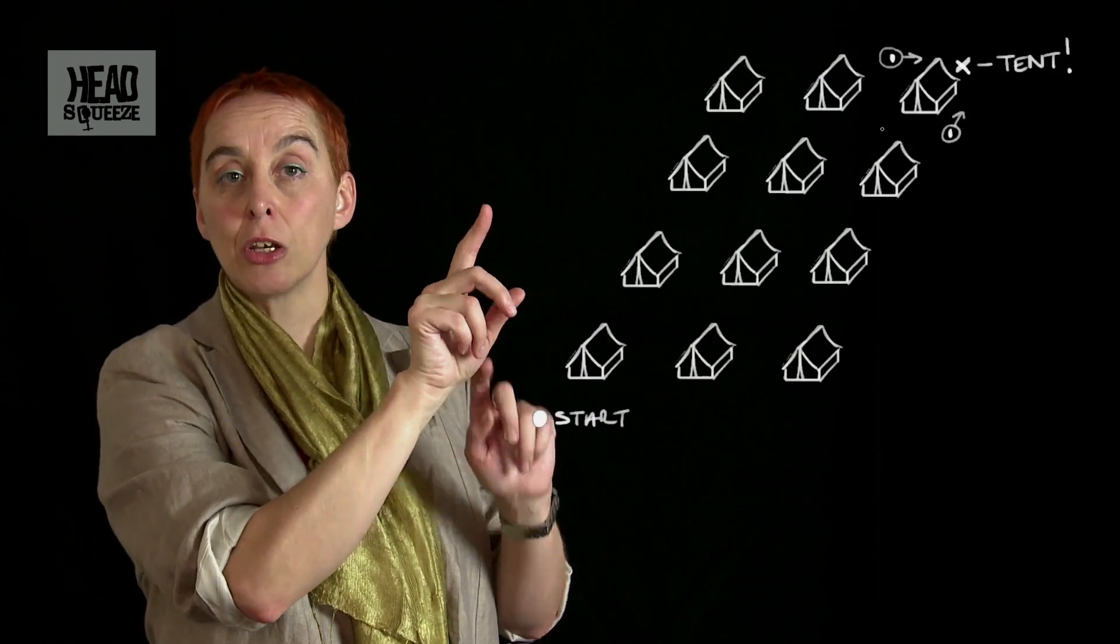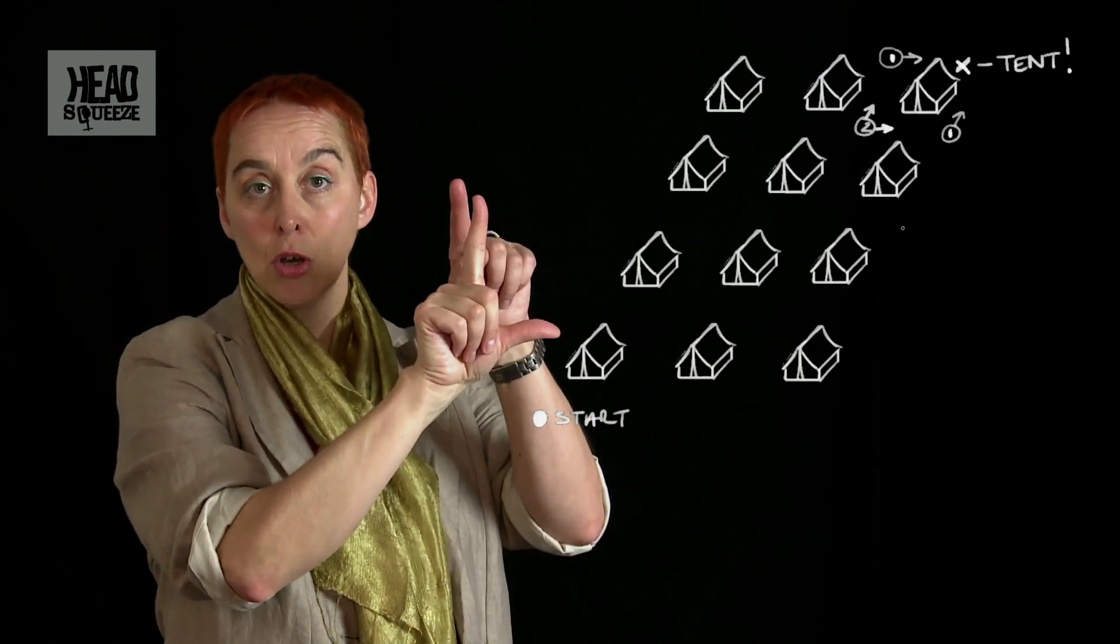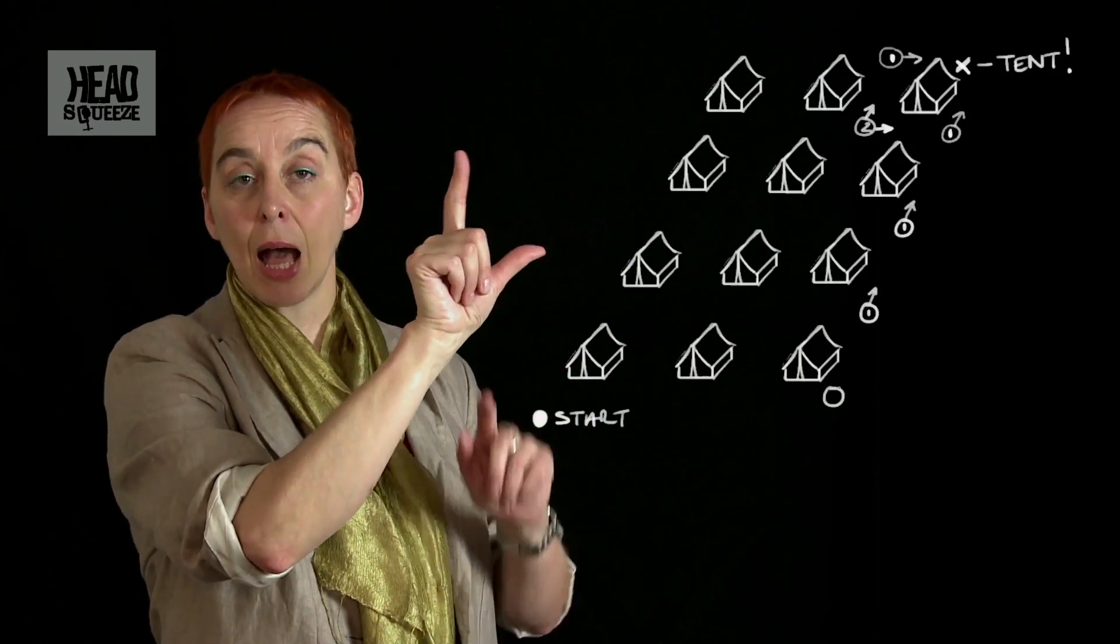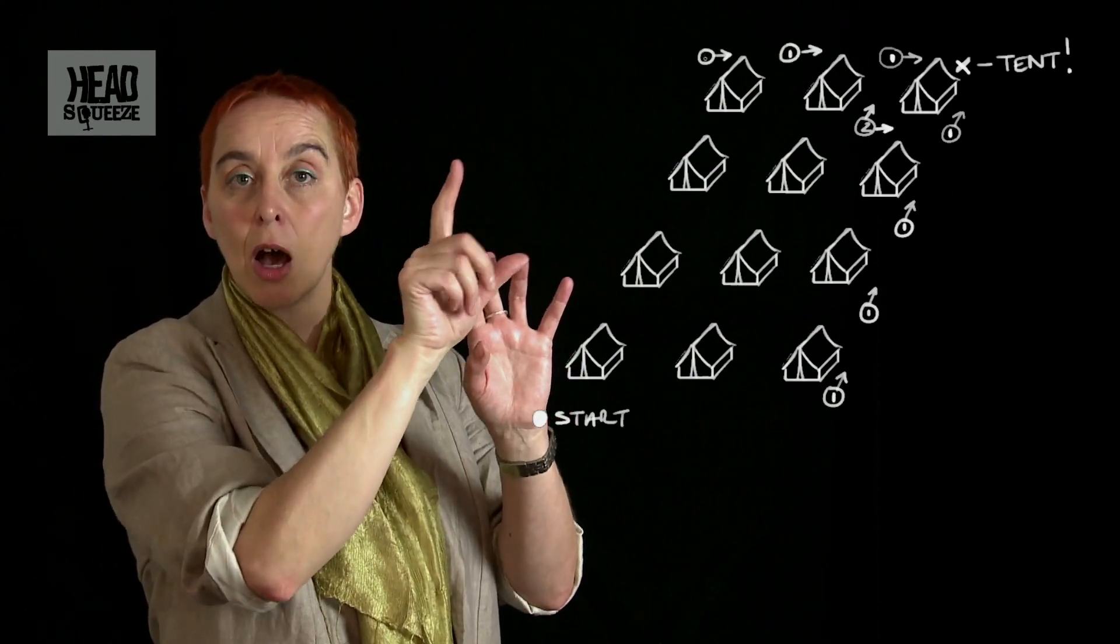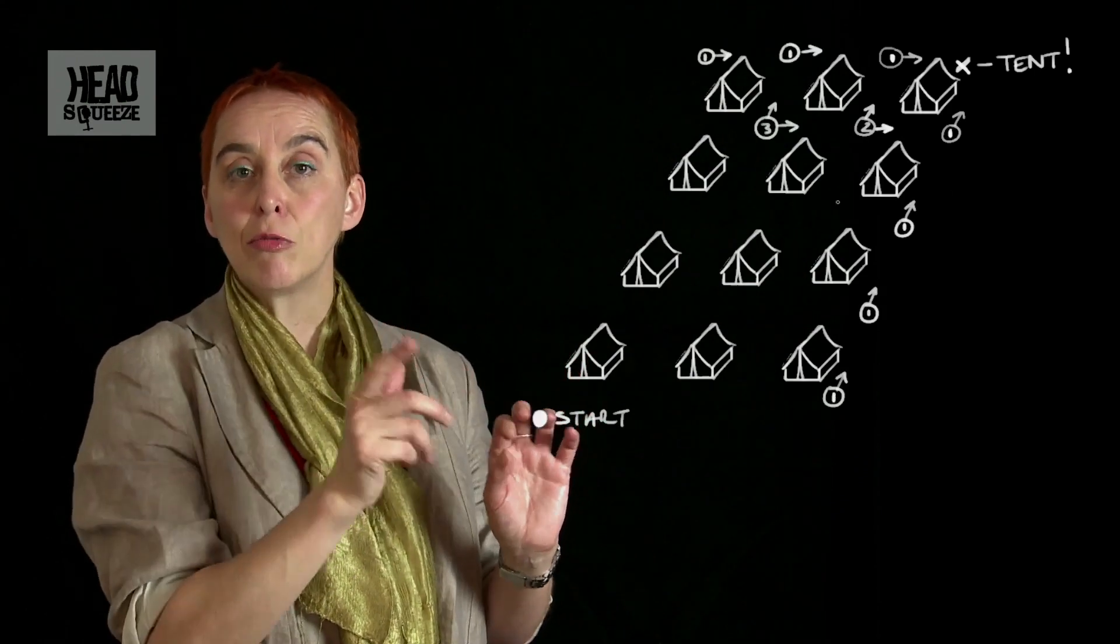So I could mark on this intersection that I've got two possible routes, one north and one east. And then by working backwards, I could mark each intersection with a number of possible routes.